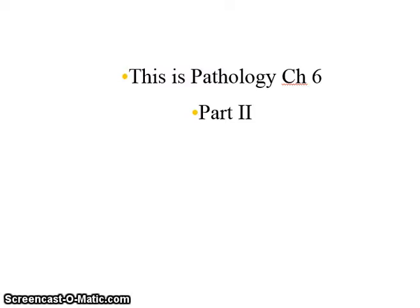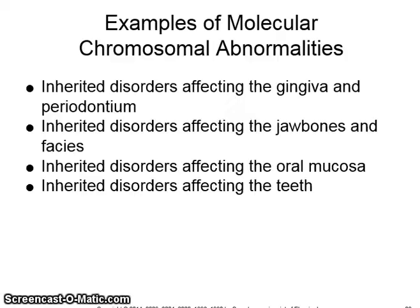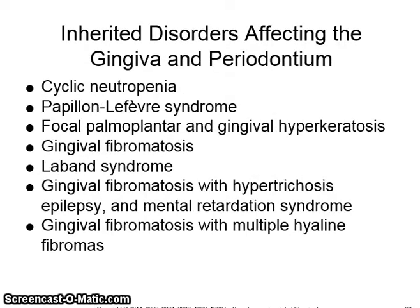Hello students, this is Pathology Chapter 6, Part 2. Examples of molecular chromosomal abnormalities. There are inherited disorders affecting the gingiva and periodontium, the jawbones and faces, and inherited disorders affecting the oral mucosa and the teeth. Inherited disorders affecting the gingiva and periodontium.